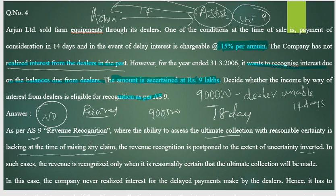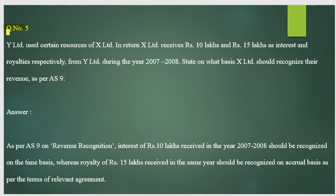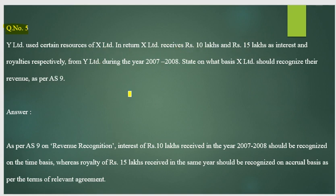That is the answer for question four — revenue is not recognized here. Question five is the same as question one: Y Limited uses certain resources of X Limited and X Limited receives 10 lakh and 15 lakh as interest and royalty respectively.